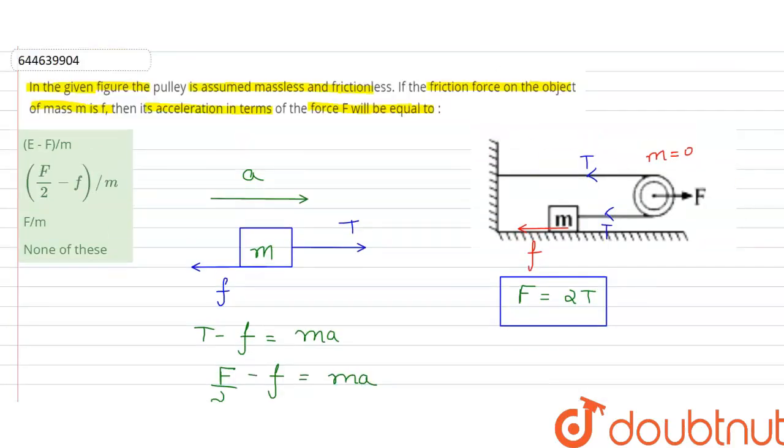So from here our correct option comes out to be option B: F by 2 minus F divided by M. This is the value of our acceleration. Thank you.